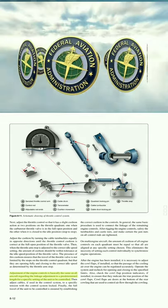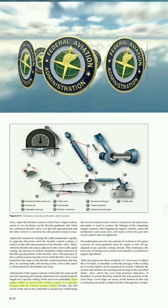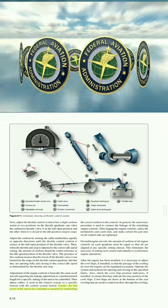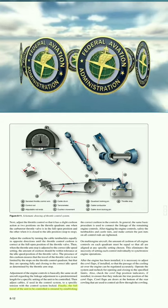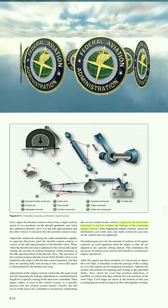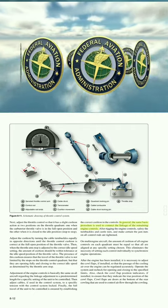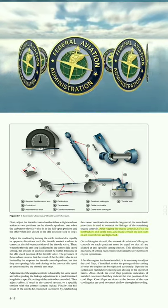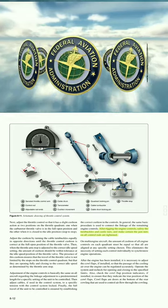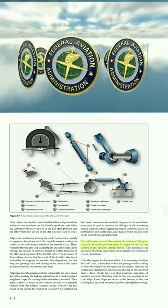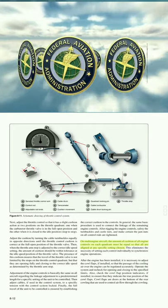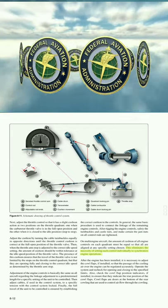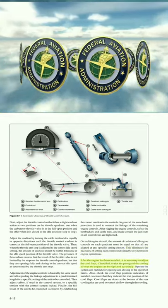Adjustment of the engine controls is basically the same on all aircraft: rig the linkage to a predetermined length for a specific setting of the unit to be controlled, adjust cables to a specific tension with the control system locked, and finally ensure the full travel of the unit to be controlled by establishing the correct cushion in the controls. After rigging the engine controls, safety the turnbuckles and castle nuts and make certain the jam nuts on all control rods are tightened. On multi-engine aircraft, the amount of cushion of all engine controls on each quadrant must be equal so that all are aligned at any specific setting, eliminating the necessity of setting each control individually to synchronize engine operations.